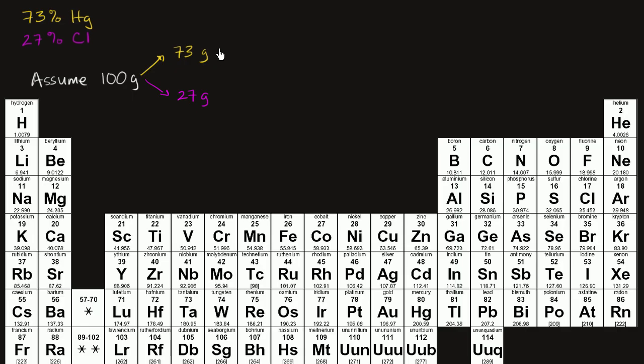And let me make it clear, this is mercury and this is chlorine. Now I just need to think about, well how many moles of mercury is 73 grams and how many moles of chlorine is 27 grams?